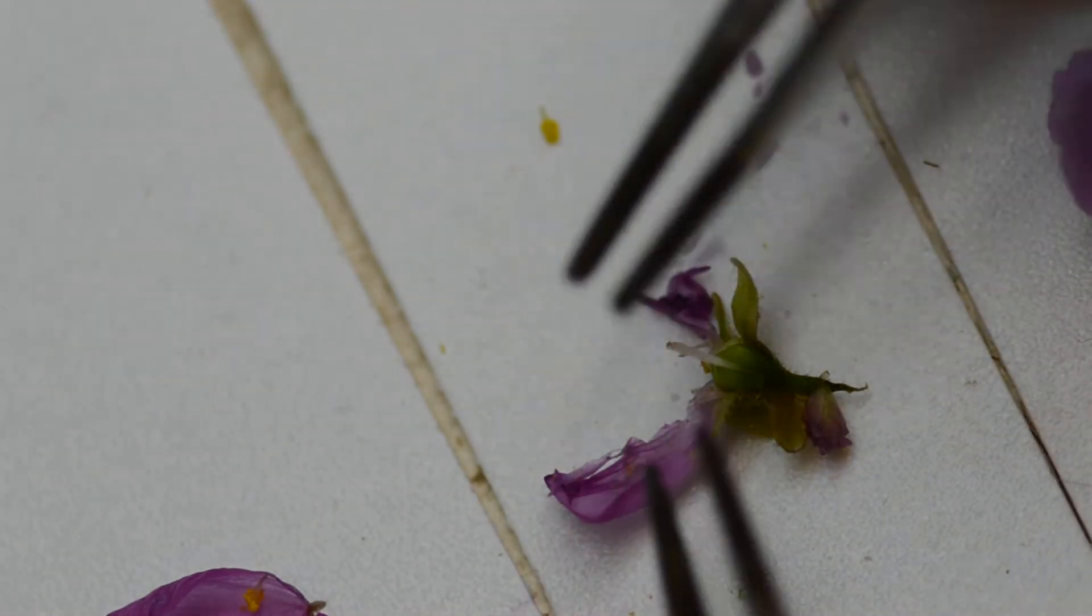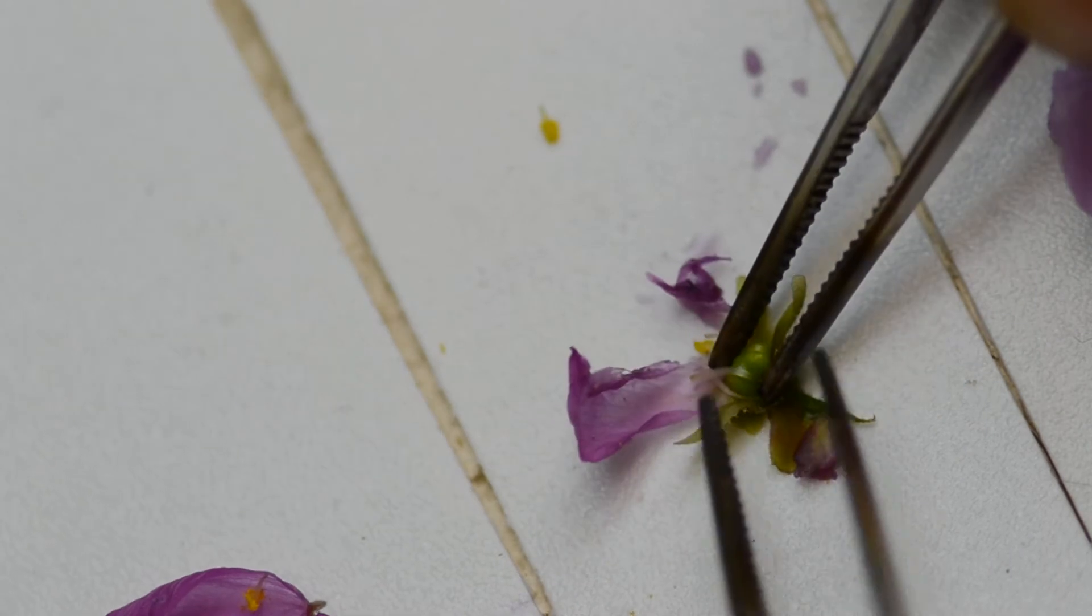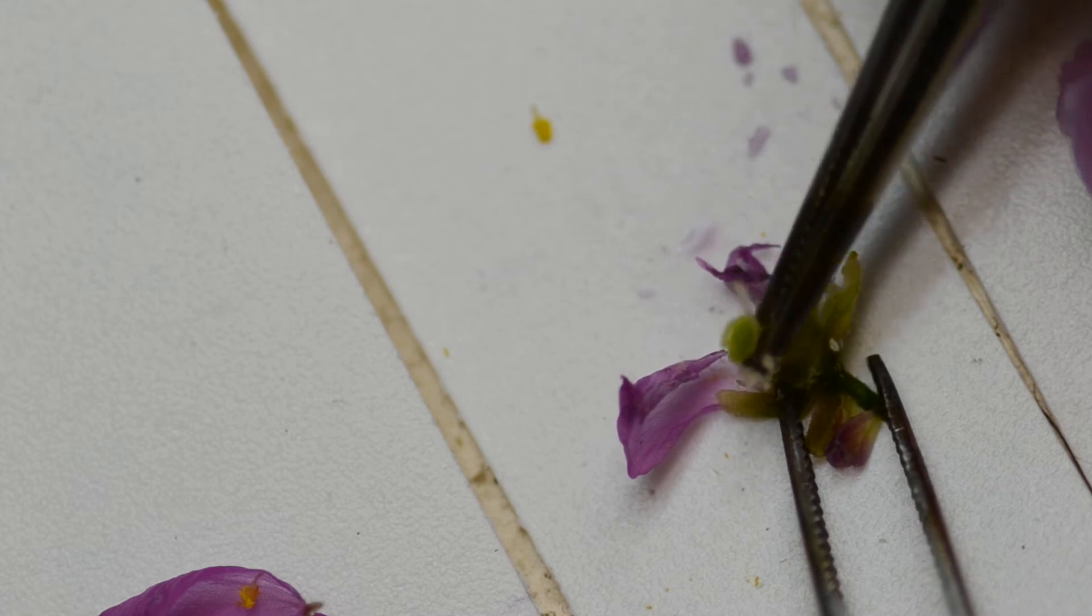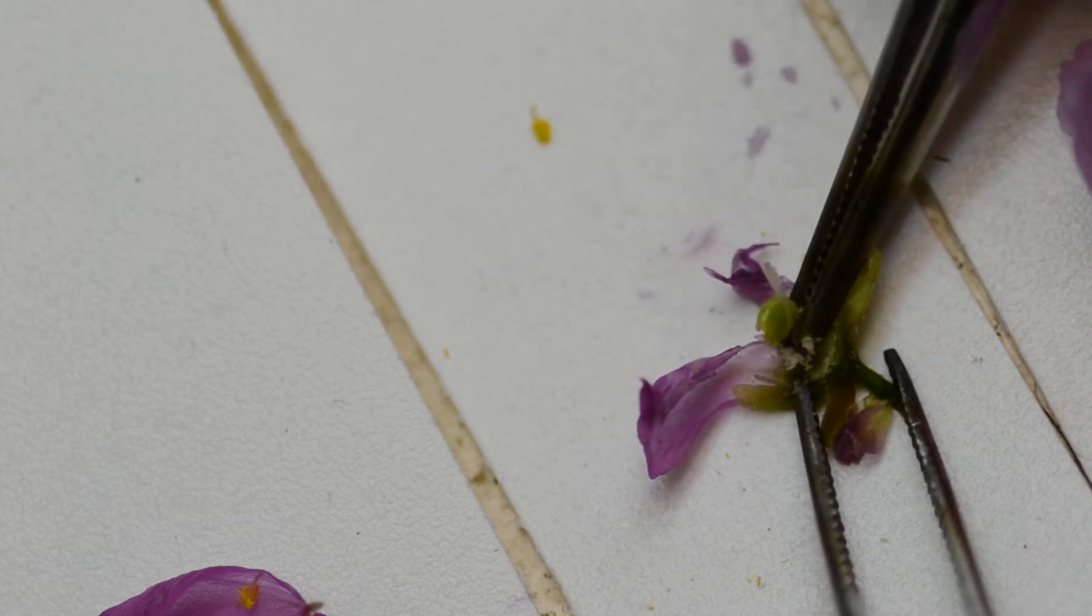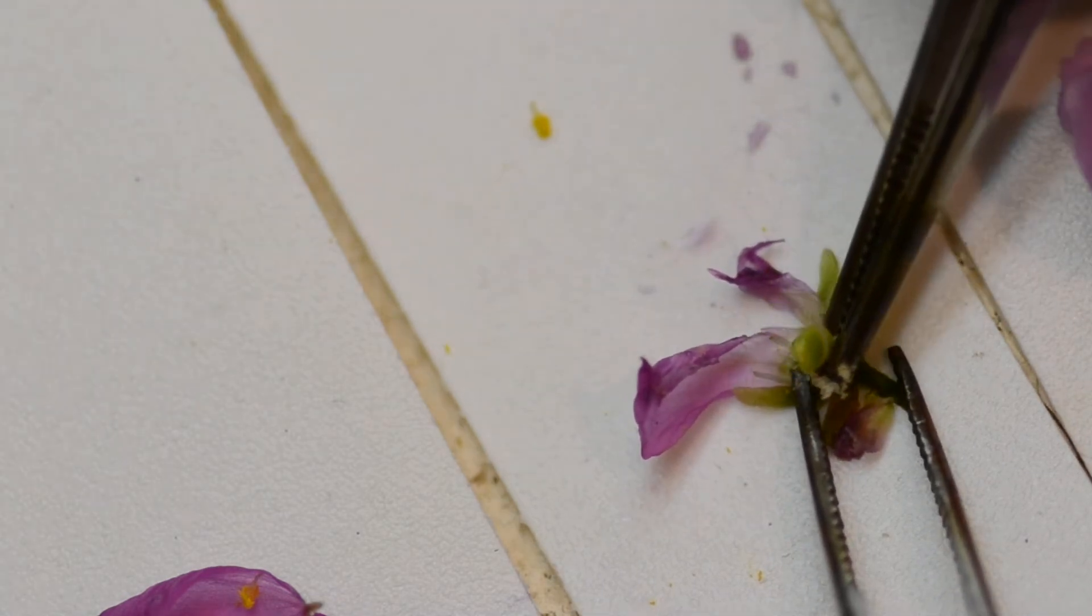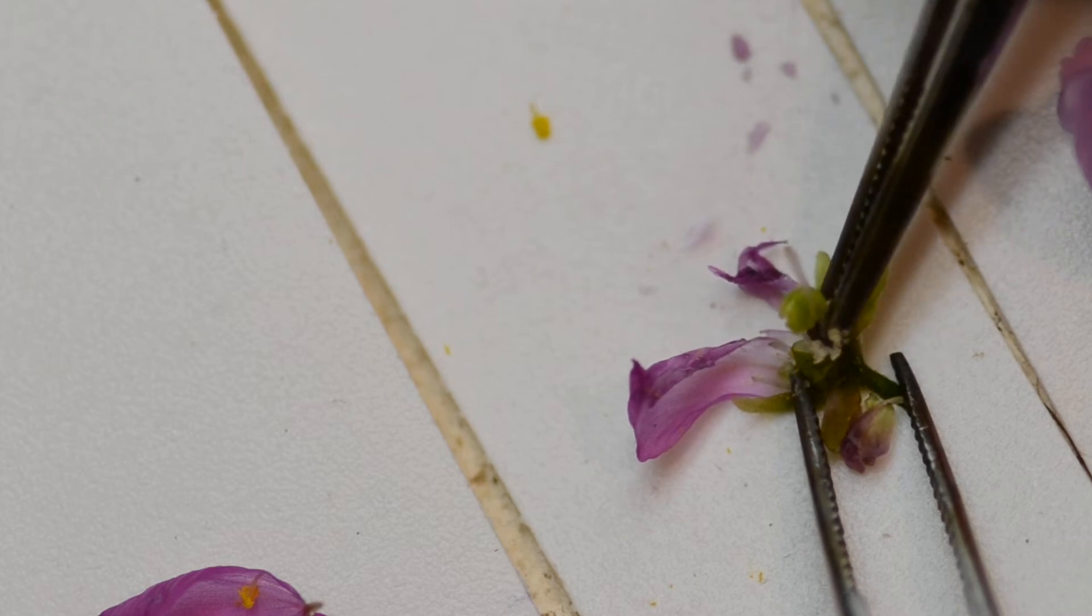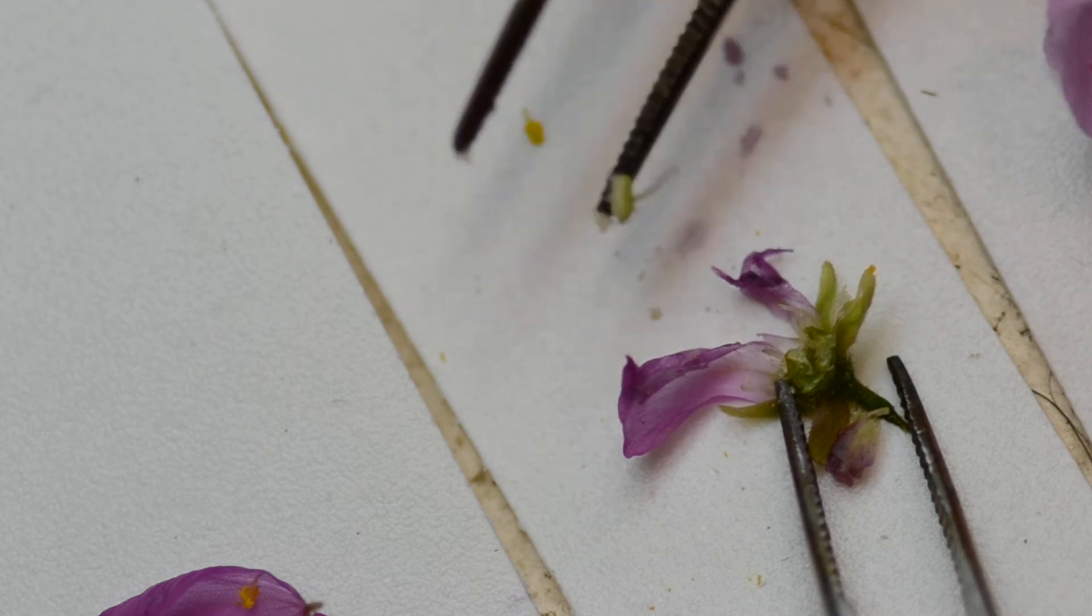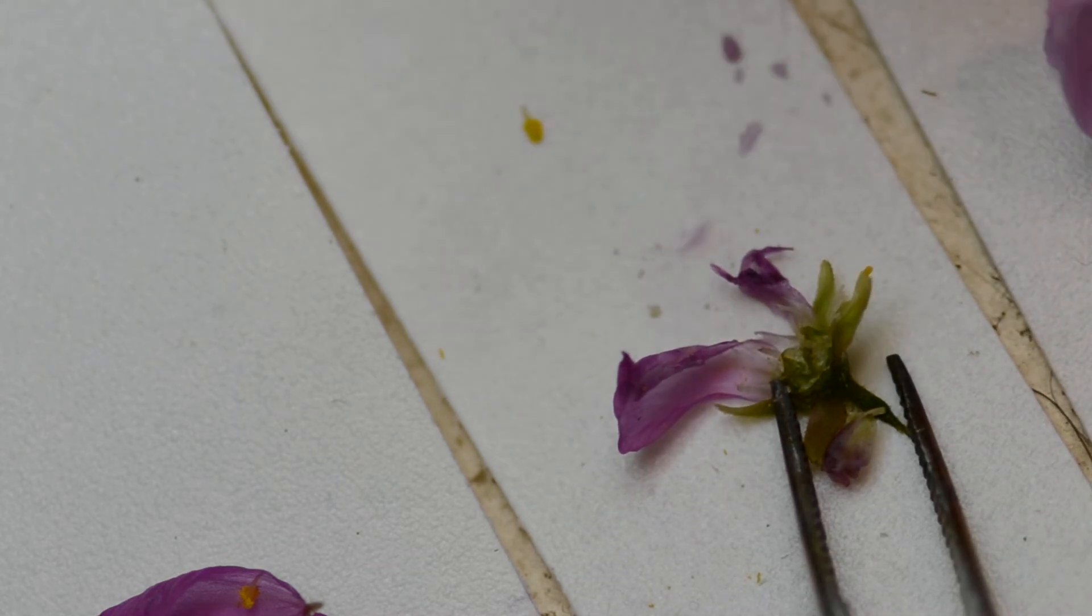So if we open up the ovary, we will be able to see some seeds, or eggs, unfertilized eggs, these little white things. So those are developed in the flower way before it ever gets pollinated.